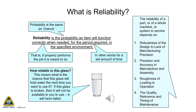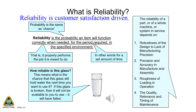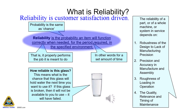Equipment reliability measures the likely length of equipment working life between failures. High reliability is valued in industry because it means that parts and components go for longer before they fail — that means more production from plant and equipment for less maintenance cost. Reliability is customer satisfaction driven, and is measured at end of life: probability of functioning to design for a period of time.